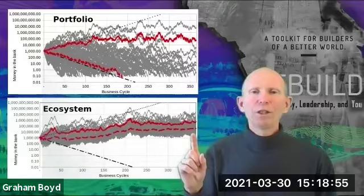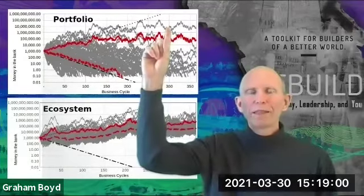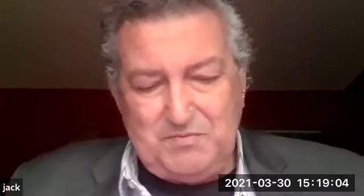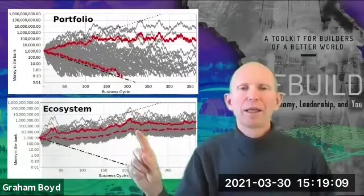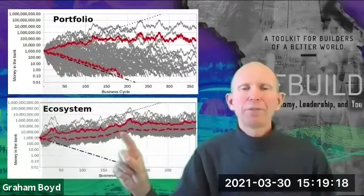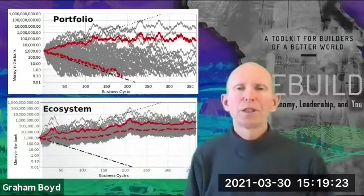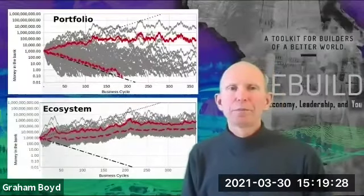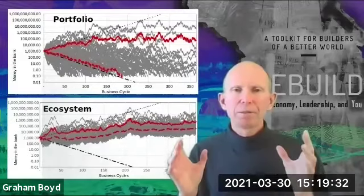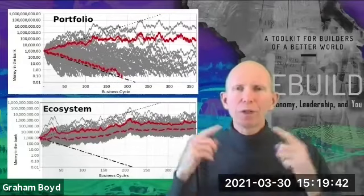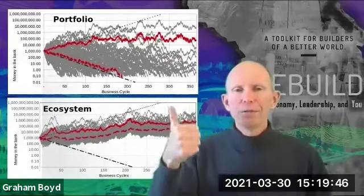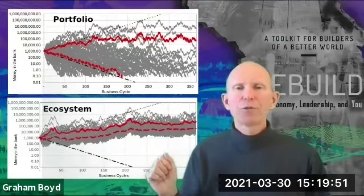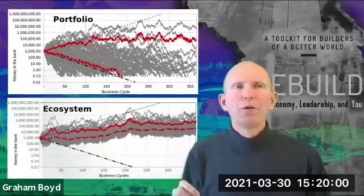In this case, even the worst company is getting close to the performance of the best company. The solid red line is the average, and the dotted red line is the median — the company exactly at number 50 in the range. So the essence of what this shows is that the kind of business ecosystem proposed in Rebuild — where all companies are incorporated in a way that includes all capitals and all stakeholders, and where there is a sharing between companies of dividends and capital gain — fundamentally transforms the financial performance of the entire group and every individual company from the perspective of pure luck.